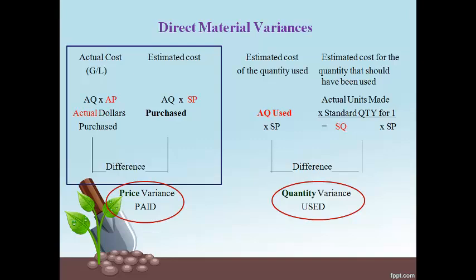The same actual quantity purchased is multiplied by the amount the company expected to pay for one, which is the standard price. The actual amount paid on the left is compared to the amount the company expected to pay, and the difference is referred to as the price variance. The difference in the actual price and the standard price creates the variance.